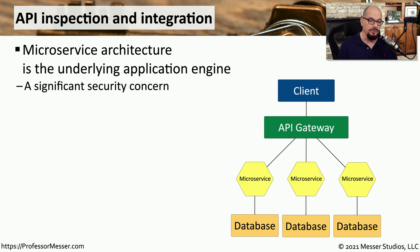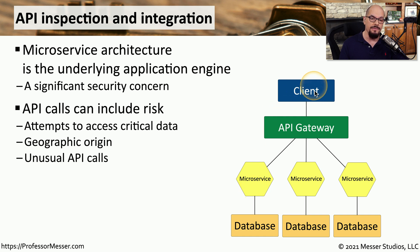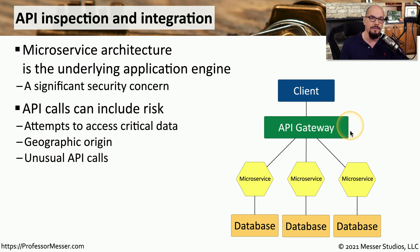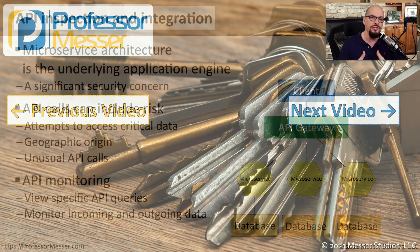Many of our applications use the microservice architecture, where an API gateway accesses microservices of the application using application programming interface, or API, calls to request and receive data from those microservices. Although this provides efficiency and redundancy, it also introduces security concerns. For example, instead of the client making requests to the API gateway, an attacker could circumvent the client and send their own requests directly to the API gateway. To manage this, you'll want to perform API monitoring, where you can view specific API queries coming from the API gateway and monitor exactly what data is incoming to your database and what information is being sent back to the client.